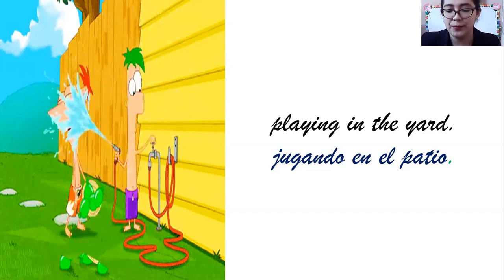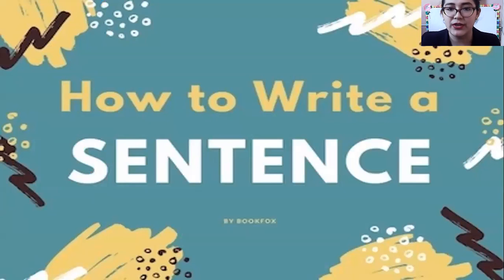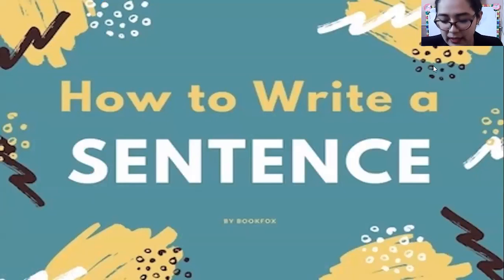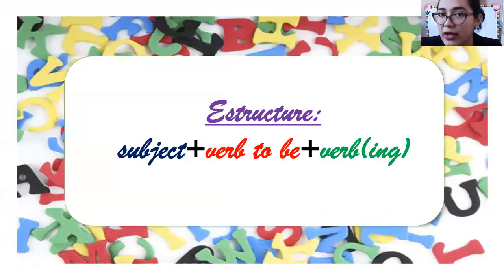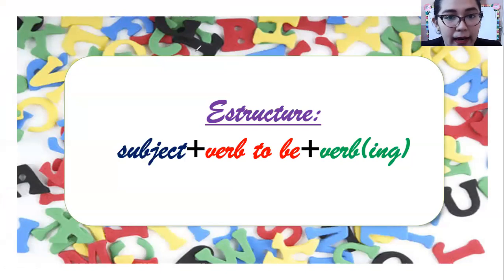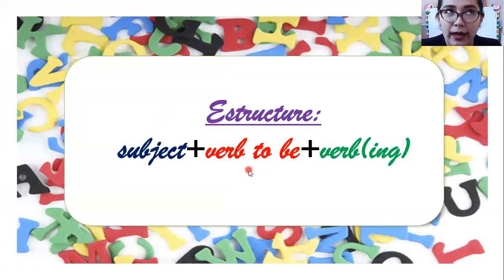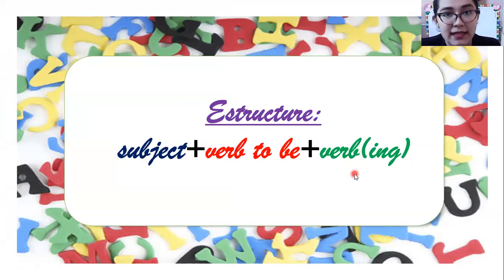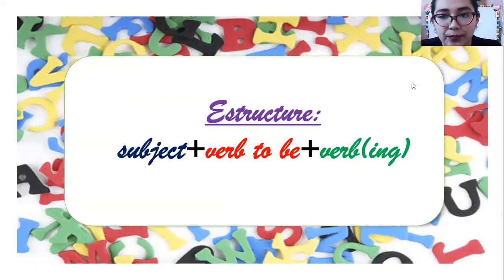Now that we've seen the vocabulary, let's make sentences. Vamos a hacer las oraciones — how to write a sentence in the Present Continuous. Don't forget the structure: everything in blue is the subject, what is in red is the verb 'to be,' and what is in green is the verb plus '-ing.' So here we go.